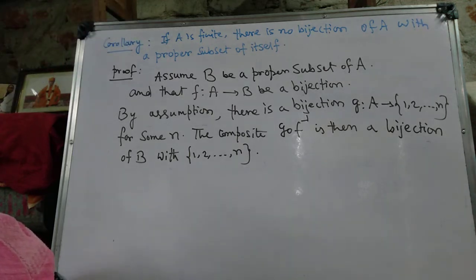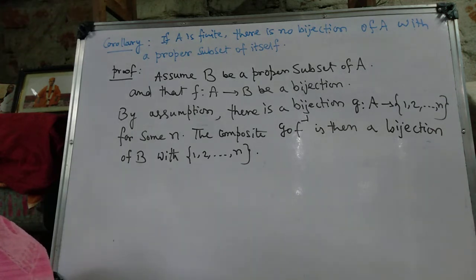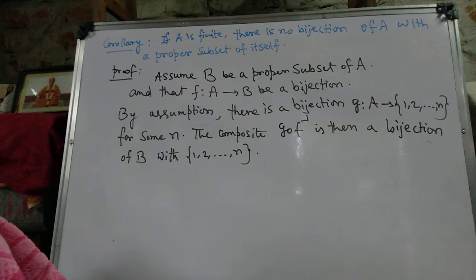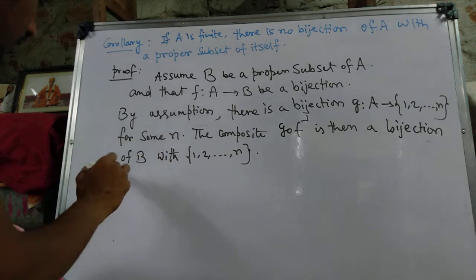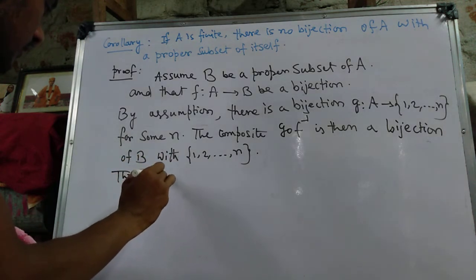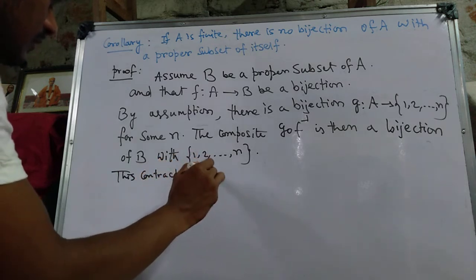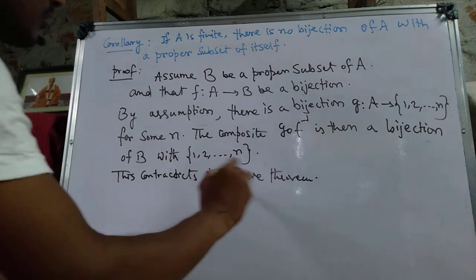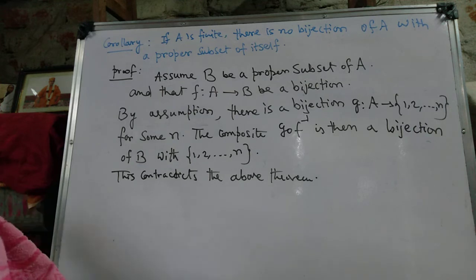So we see that if A is finite, there is no bijection from A with a proper subset of itself. The composite g∘f⁻¹ from B to {1, ..., n} cannot be a bijection, because B is a proper subset. This contradicts the preceding theorem, so this corollary is true.